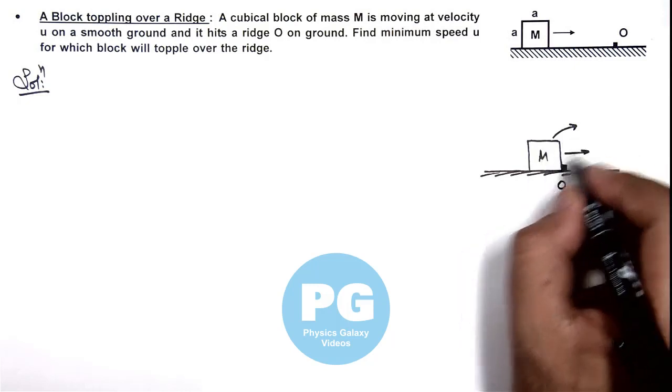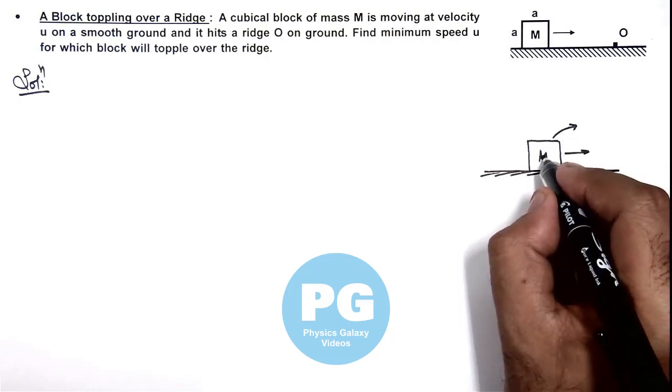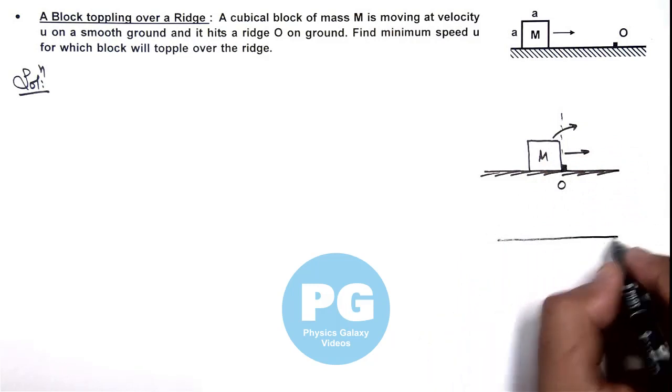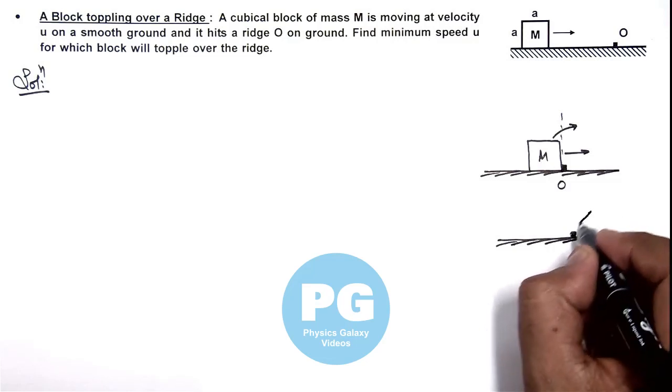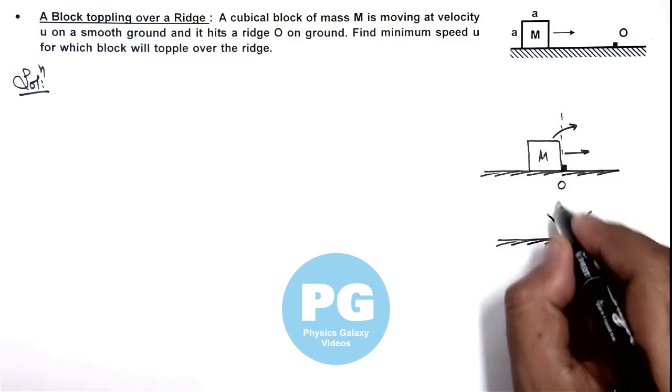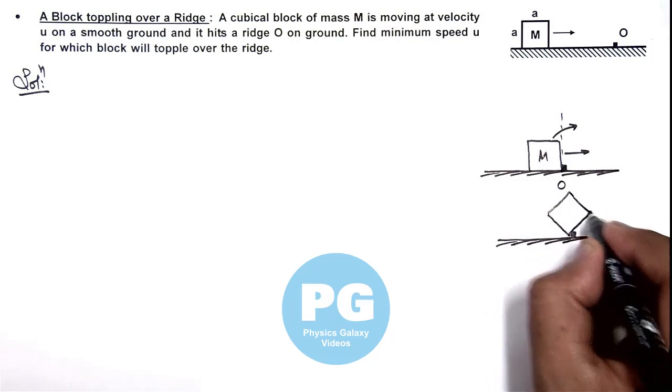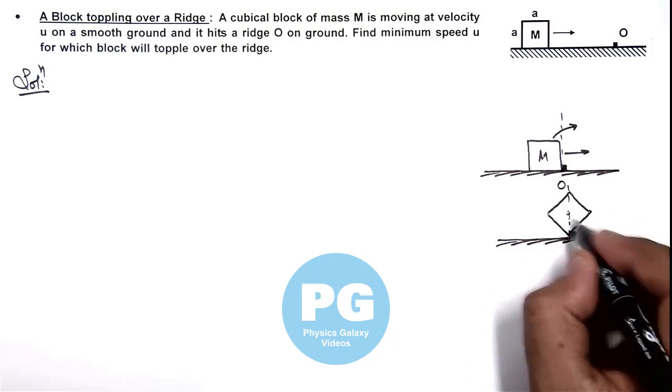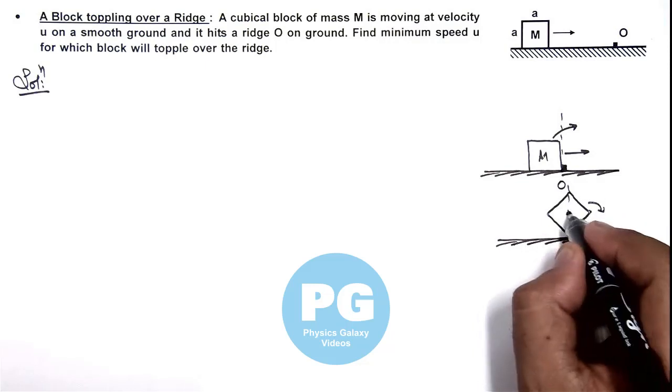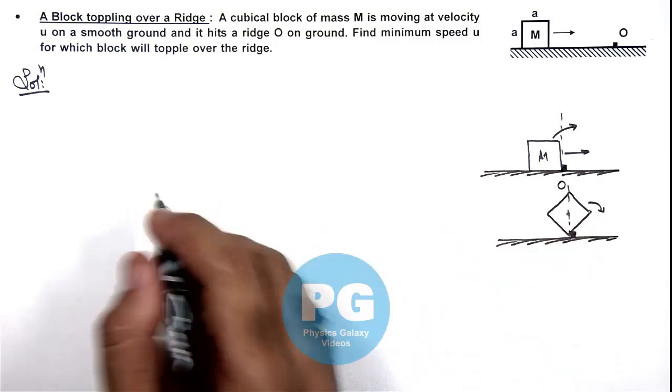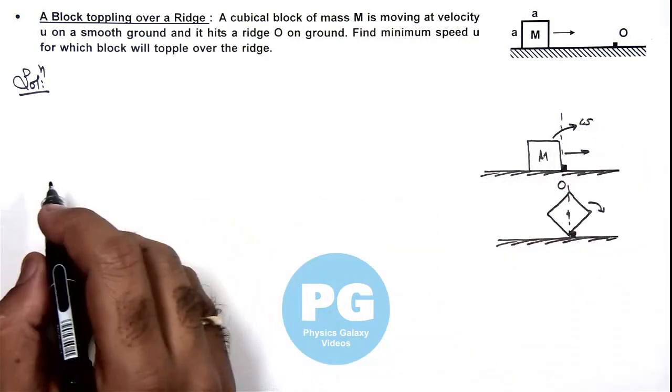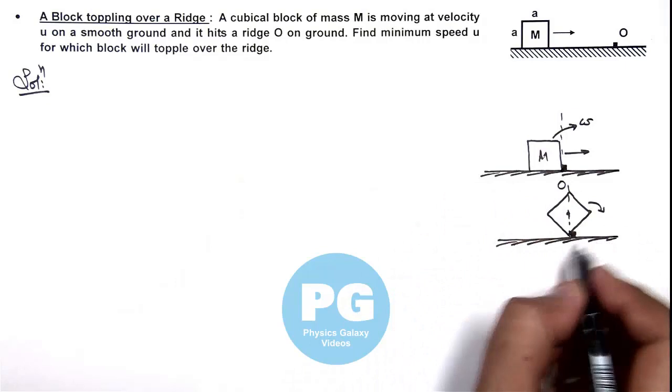And it will topple only if its center of mass will cross this vertical line. So if its center of mass will cross over this line, then it'll topple, otherwise it'll fall back. So in this situation, first we can calculate the angular speed with which it starts rotating about the ridge.